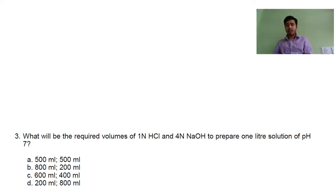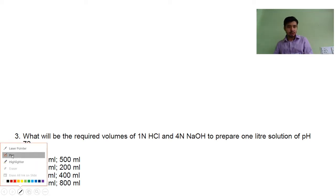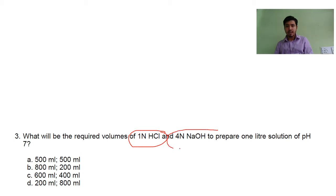So we have two things: 1 normal HCl and 4 normal NaOH, and both will be used to prepare one liter solution. Let's try to solve this problem.